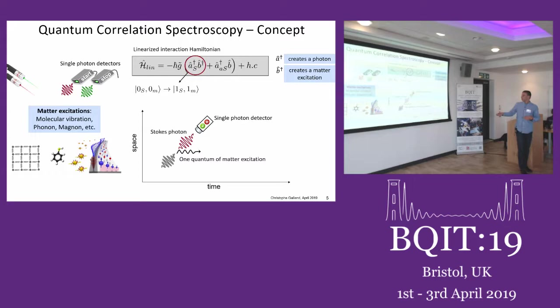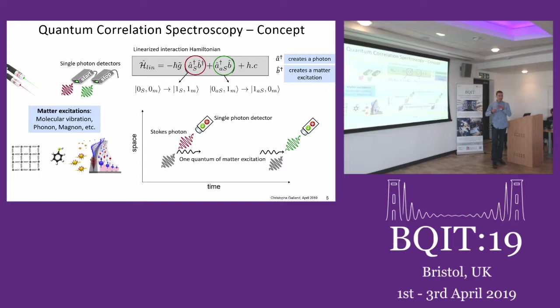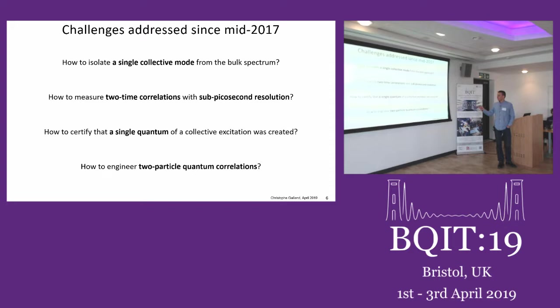Then I need a readout step, created by a second laser pulse, where I look at the anti-Stokes photons that are inelastically scattered at higher frequency. This second term maps the state of the phonon — the matter or mechanical mode — onto the state of the anti-Stokes photon.